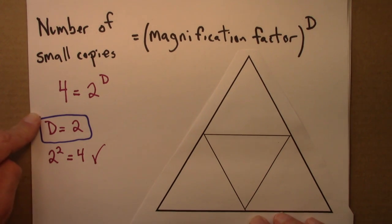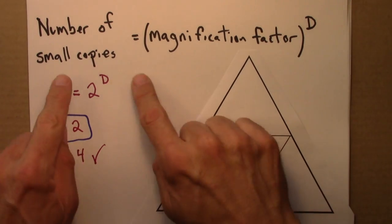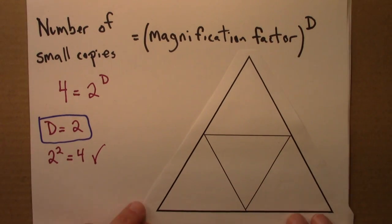So we haven't learned anything new about triangles. We've known that they're two dimensional. But this is another example to show how this formula works. So next, we'll use this formula on a fractal, and we'll see what we get.